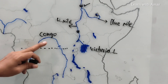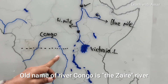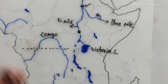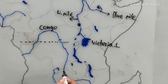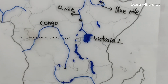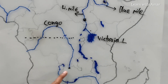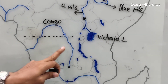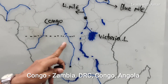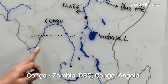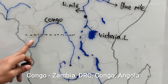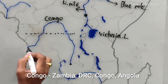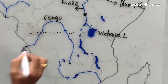The old name of River Congo is River Zaire. Now we call it Congo River. It originates in the country Zambia, then DRC — Democratic Republic of Congo — and goes through the Republic of Congo. Finally, it joins the Atlantic Ocean.